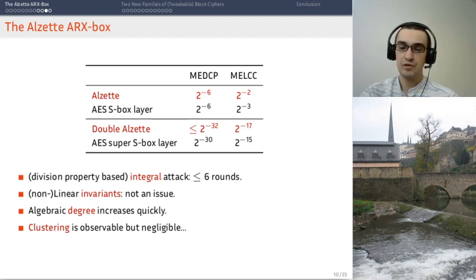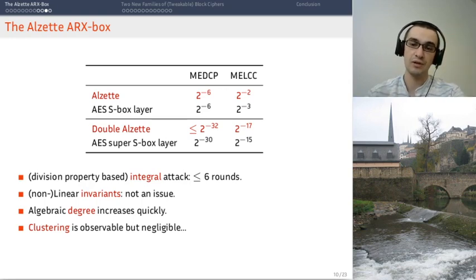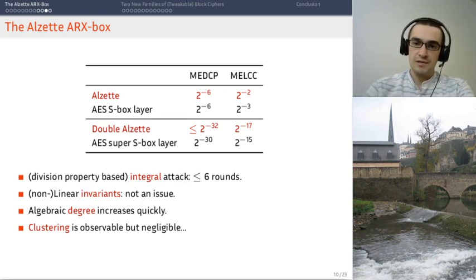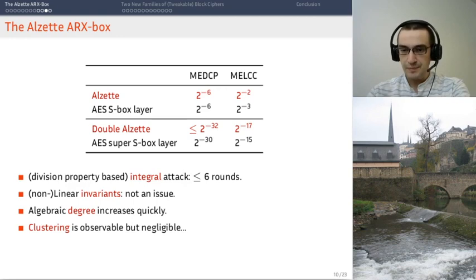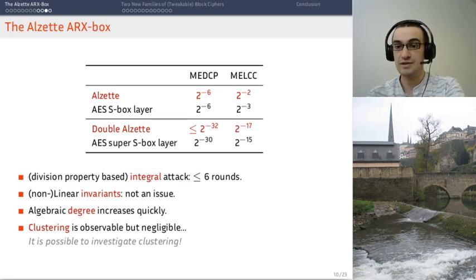And, as I mentioned before, we could make some experiments to see if there was a big clustering of the differential trails. So, many differential trails with the same starting point, the same end point, but different values in the middle. This is something which is observable, but nothing to be worried about. And indeed, the very fact that we could make these experiments is a nice aspect of ALZET.